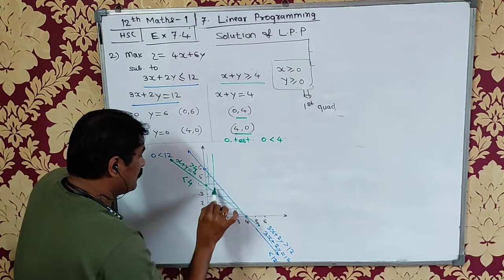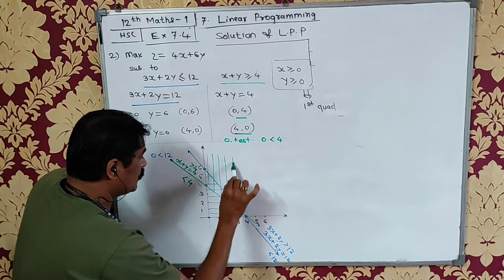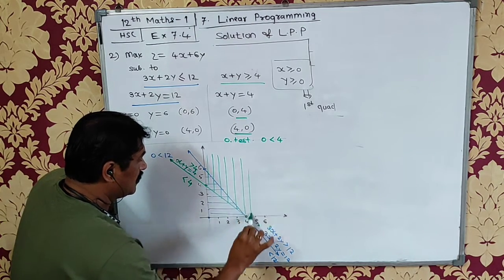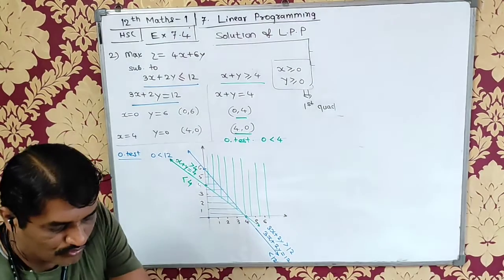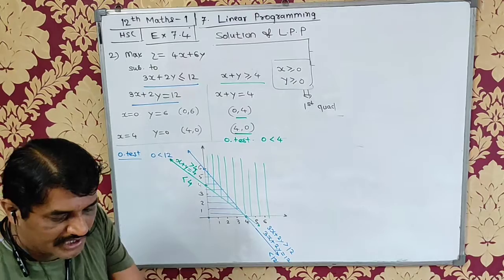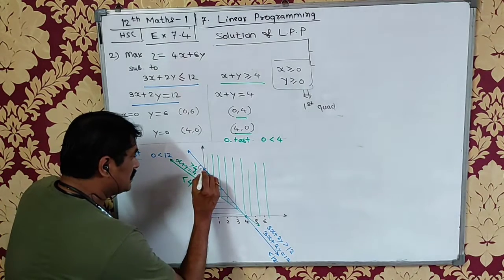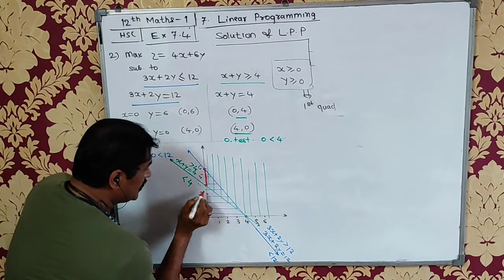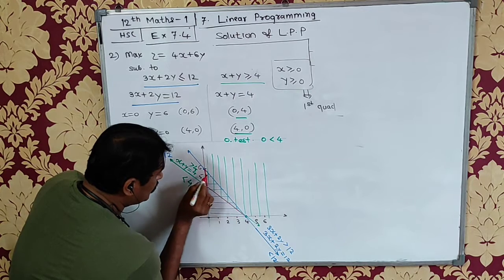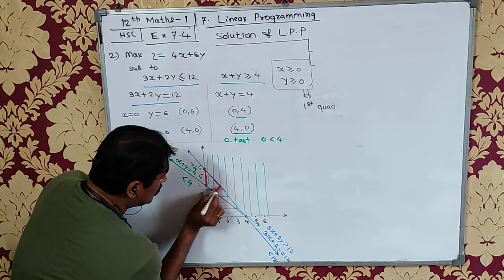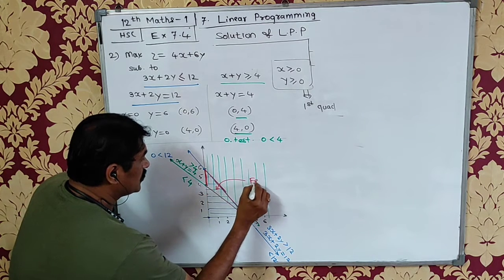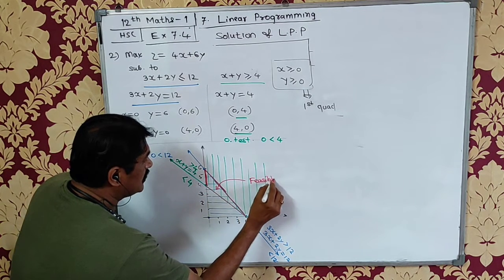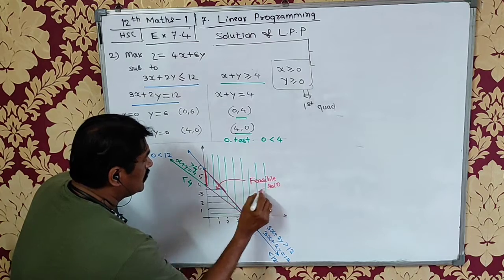So I will mark the set of all the points in the first quadrant which are above the line, on the non-original side. And now I have to go for the common shaded area. Common shaded area is this area. This is our optimal and feasible solution.